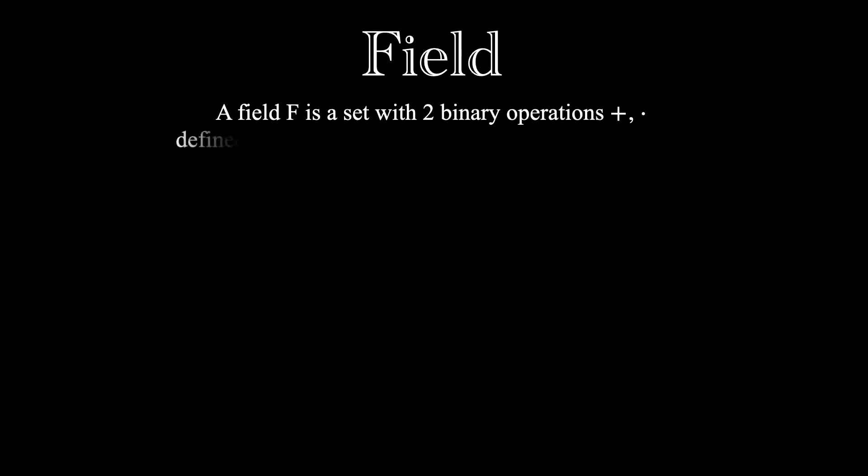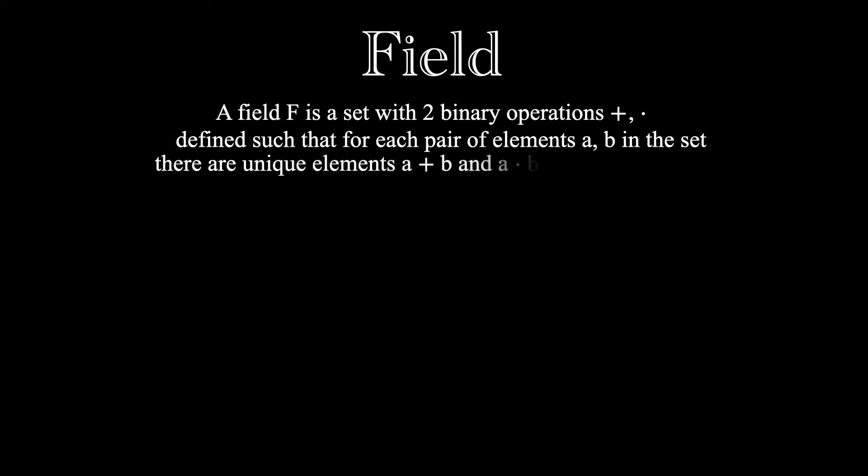First off, let's go through its definition. A field is a set that consists of two binary operations, addition and multiplication. These operations are defined so that for any pair of elements a and b that are in the field, there are unique elements a plus b and a times b that exist in the field as well. This means that a field is closed under both addition and multiplication.